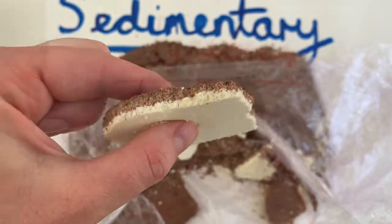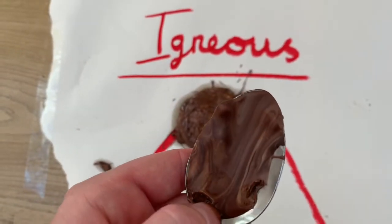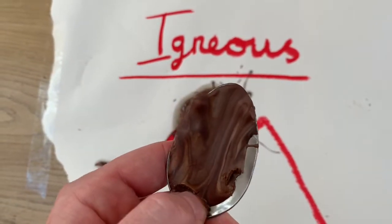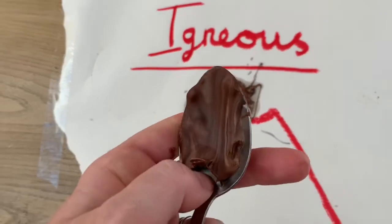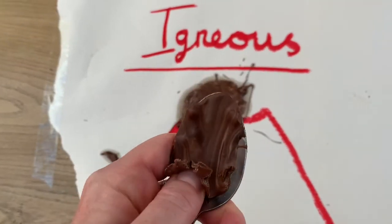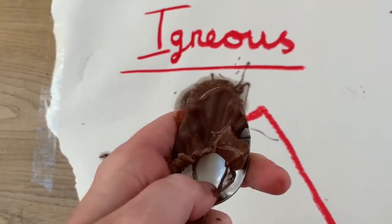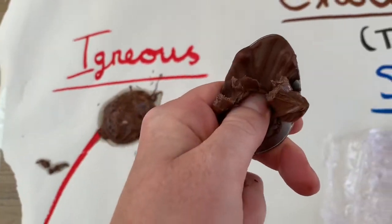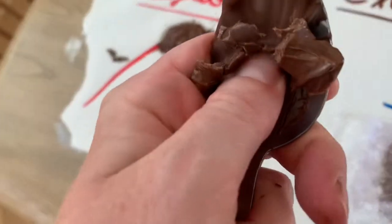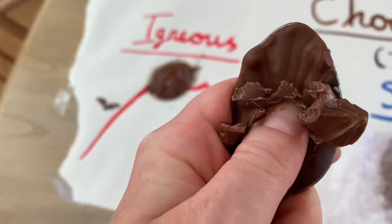And back to our igneous rock, which was the rock that came out of the earth as molten rock lava. This has finally cooled down here, as you can see. It shows a hard, sort of swirly igneous rock.